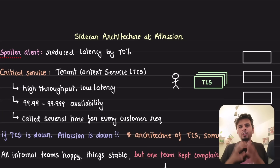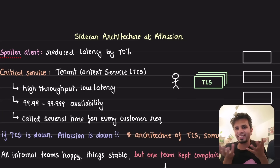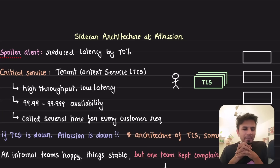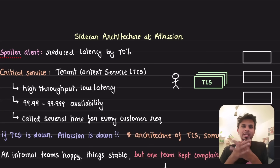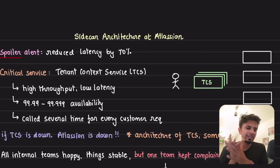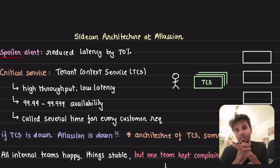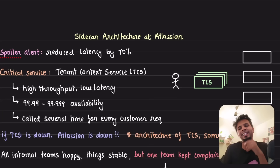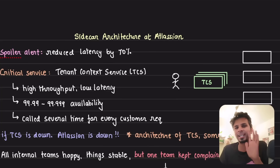One of the patterns that most of us find amusing is the sidecar pattern. It has a fancy name. Sidecar pattern is something that if people are aware of, they don't know when to use it. If people are not aware, they are always fascinated by the fancy word. So let's talk about the sidecar architecture at Atlassian — what they do, how they do it. Spoiler alert: it helps them reduce their latency by 70%. Let's dig deeper to understand what they are actually doing.